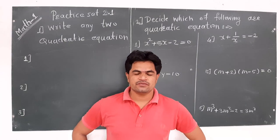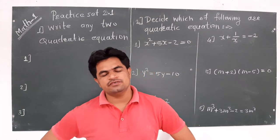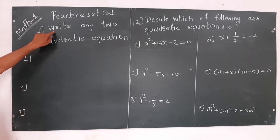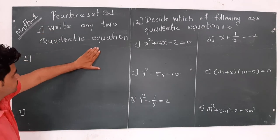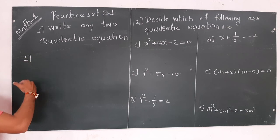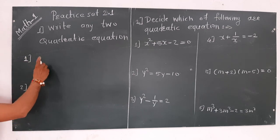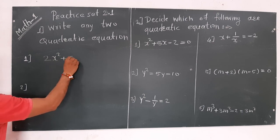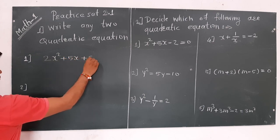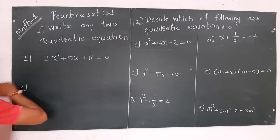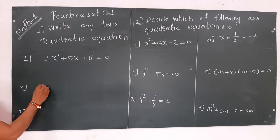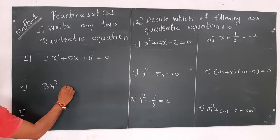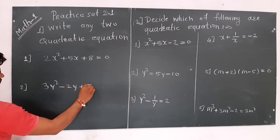Practice Set 2.1, first and second problem. The first problem: write any two quadratic equations. We can write, according to us, any two quadratic equations. Suppose we have taken 2x² + 5x + 8 = 0. This is the first quadratic equation. Second, suppose we have taken 3y² - 2y + 5 = 0.